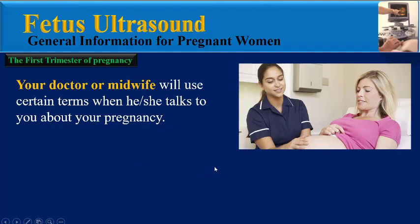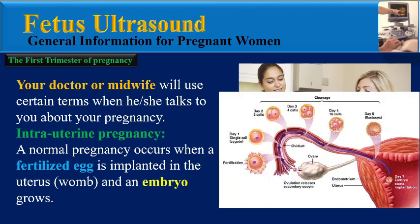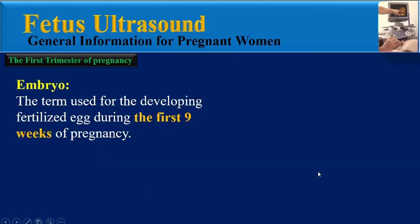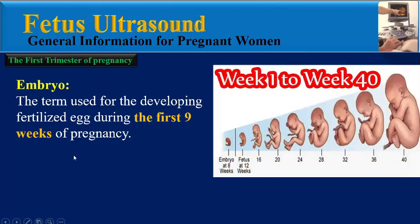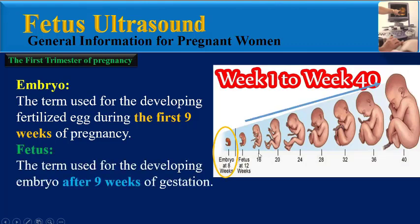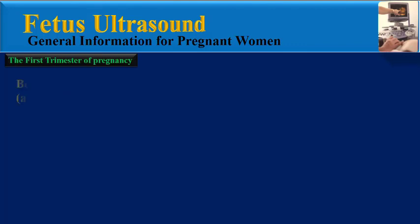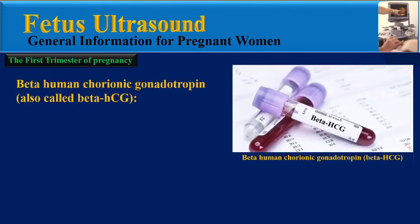Your doctor or midwife will use certain terms when talking to you about your pregnancy. The first one is intrauterine pregnancy — a normal pregnancy occurs when a fertilized egg is implanted in the womb and the embryo grows. Another term is embryo: the term used for the developing fertilized egg during the first nine weeks of pregnancy. Fetus is the term used for the developing embryo after nine weeks of gestation.